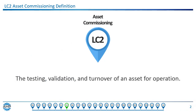Asset commissioning is defined as the testing, validation, and turnover of an asset for operation. It consists of the processes that ensure assets are functional before they're installed, and then functional when they are installed in their operating environment, and then proven to be capable of fulfilling their design function and ready for release for production.